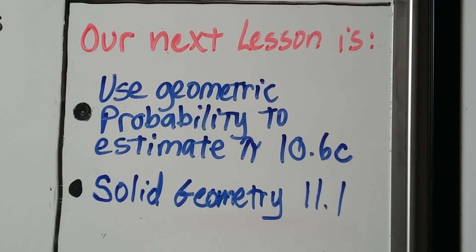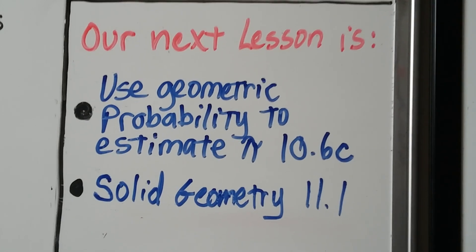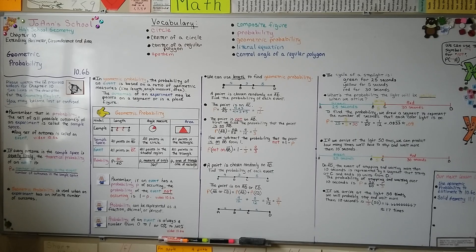Our next lesson is using geometric probability to estimate pi — that'll be 10.6c — before we move on to chapter 11 and solid geometry. We can use geometric probability to find the probability that a dart lands on a certain part of a dartboard. I hope I explained this well and I'll see you next time!